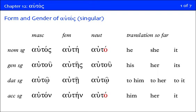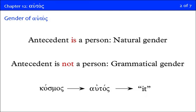Now, that's useful because when you see auton, you know that it has to be accusative singular masculine. But in the neuter, it's auto with an omicron. And you'll notice that unlike ego and su, first and second person, in the third person we do have gender. So you have autos, autai, auto.